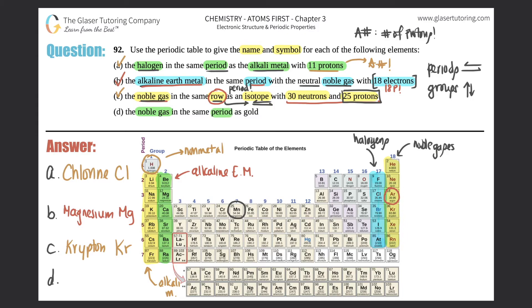Last but not least, part d: They want the noble gas in the same period as gold. Where's gold on the periodic table? Gold is Au, all the way down here. It's in the same period, so from left to right, and it's a noble gas. We said before that noble gases are here. If I scan this, it's got to be radon, Rn. Simple as that. This is radon, R-A-D-O-N, and the symbol is Rn. We are finished.